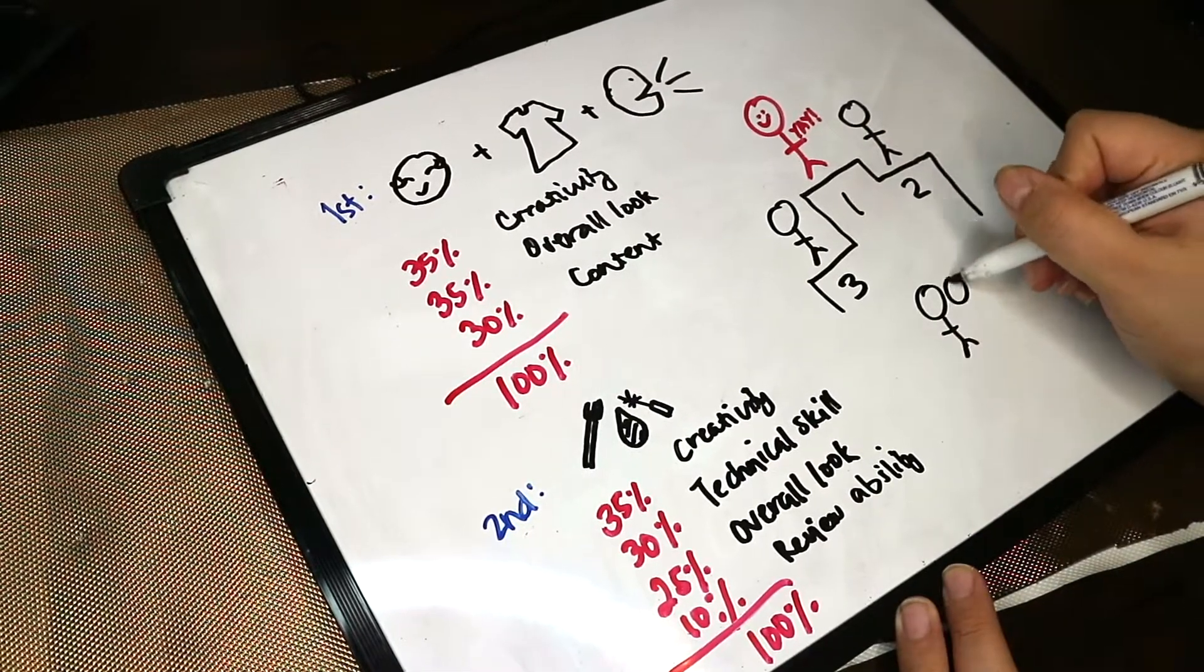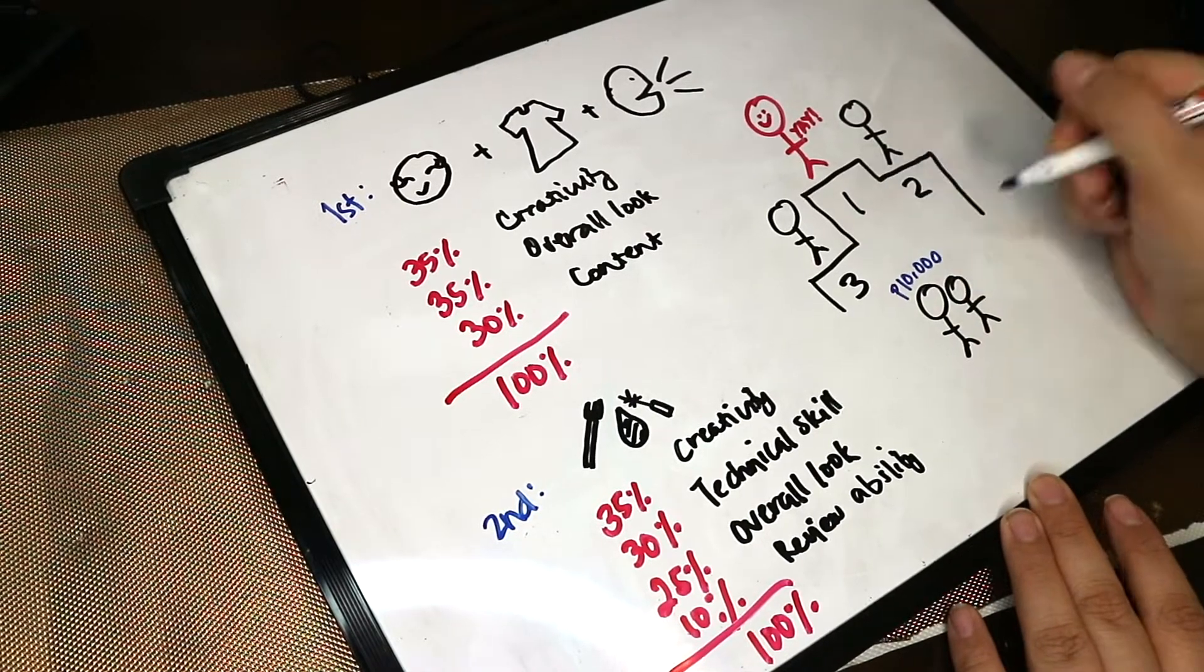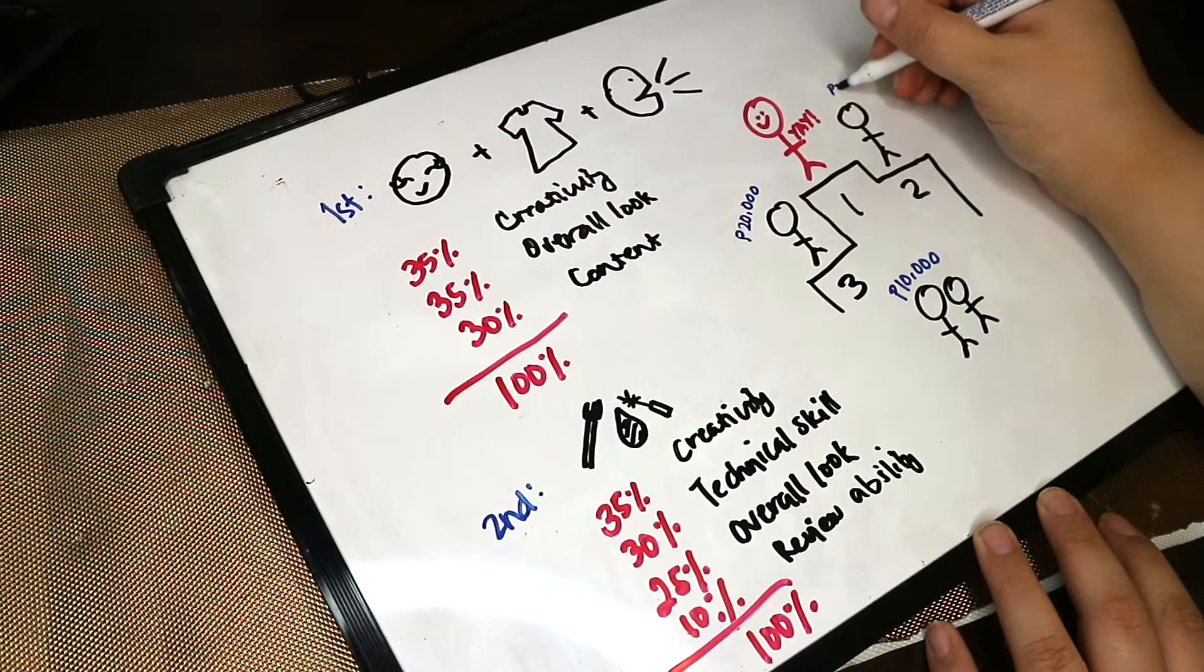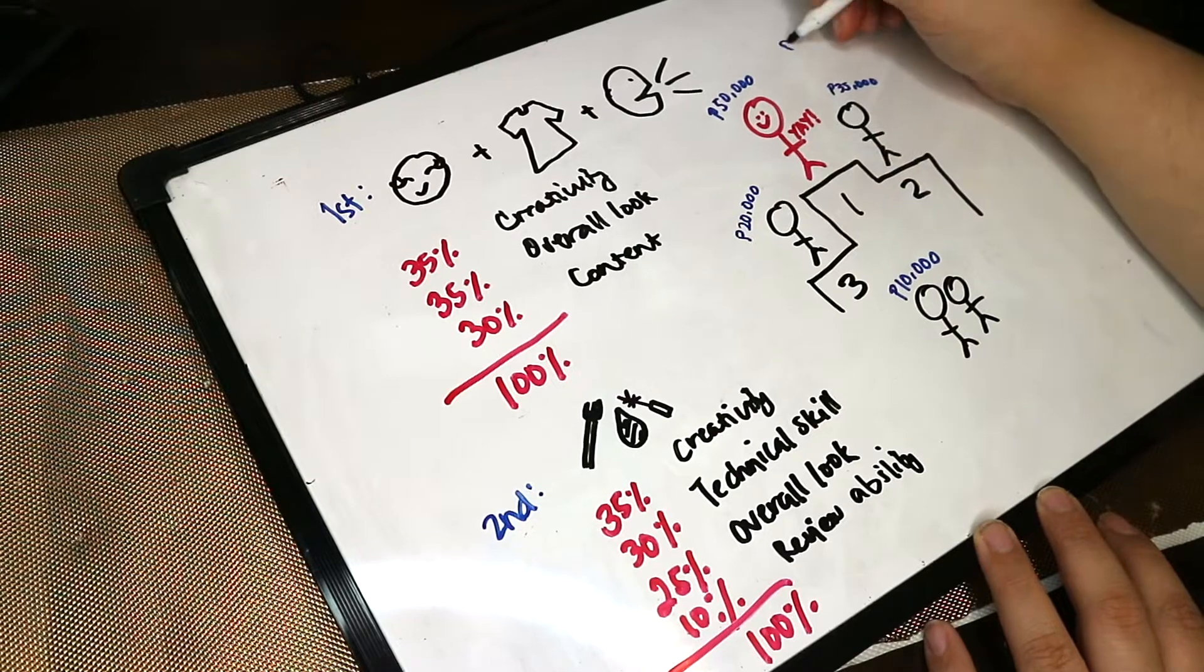The great thing about this competition is everyone will not leave empty handed. The other two will receive a consolation prize of 10,000 pesos. The second runner up is 20,000 pesos. The first runner up is 35,000 pesos. And the first place will get 50,000 pesos.